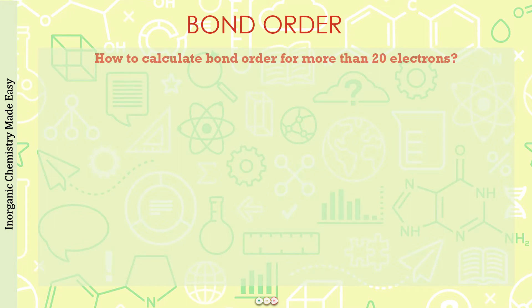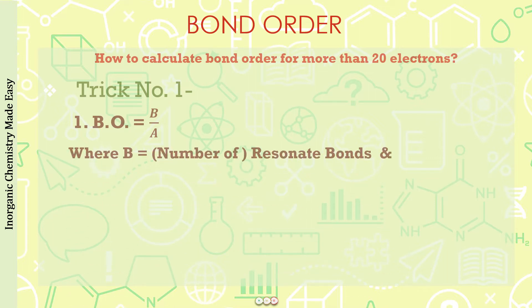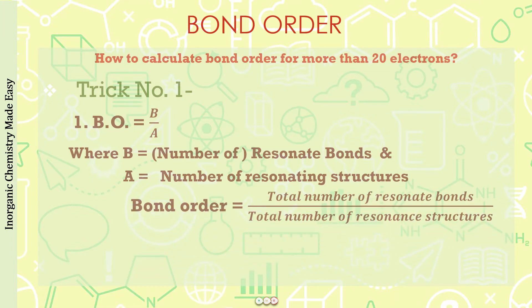How do we calculate bond order for more than 20 electrons? Trick number one says that bond order equals B divided by A. B is the number of resonant bonds and A is the number of resonating structures. So bond order equals total number of resonant bonds over total number of resonance structures.